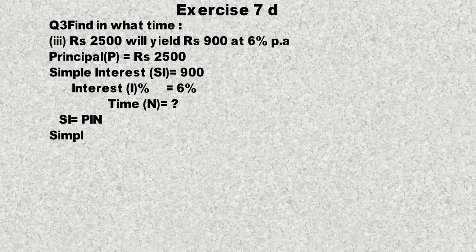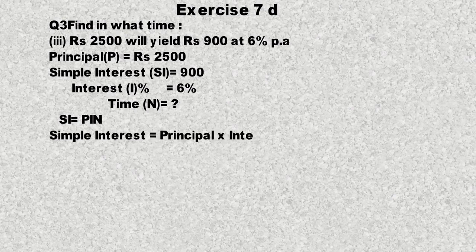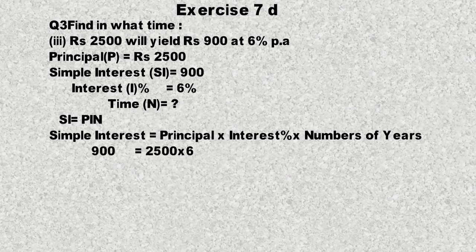SI = PIN بہت مشہور طریقہ ہے۔ Simple Interest = Principal × Interest Percent × Number of Years۔ Simple interest = 900، principal = 2500، percentage = 6%، number of years = n۔ 900 = 2500 × 6% × n۔